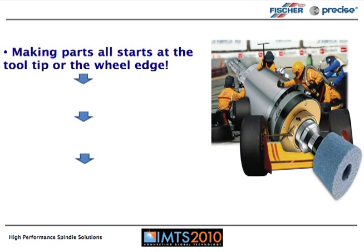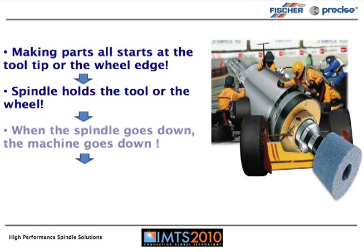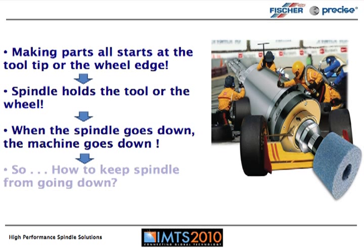So why focus on the spindles? Why is that such a key part when we look at the overall productivity of the machine? Well, making parts all starts at the tool tip, or the wheel edge for grinding. It's the spindle that holds the tool or the wheel, and when the spindle goes down, the machine goes down as well. So how do we keep the spindle from going down? Where can we start?